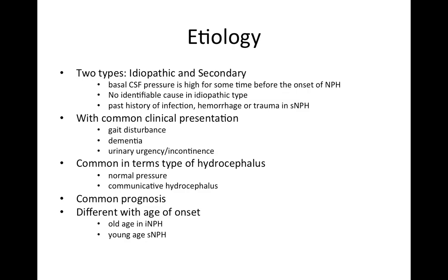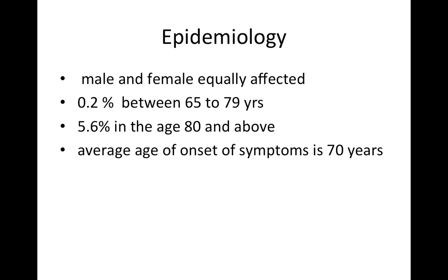The idiopathic type occurs in elderly people, those older than 80 years. In the secondary type, any age group can be affected, most commonly younger individuals. Regarding epidemiology, males and females are equally affected. Between the age group of 65 to 79 years, 0.2% of people are diagnosed, rising to 5.6% in the age group of 80 and above. The average onset of symptoms is about 70 years.